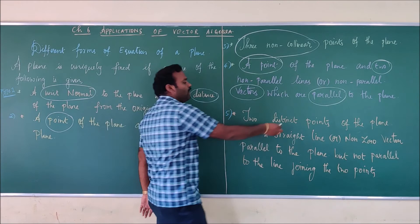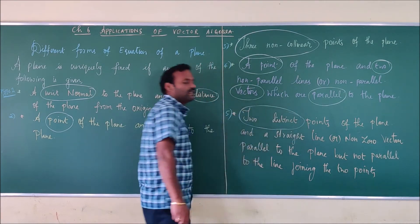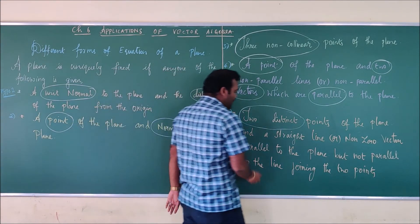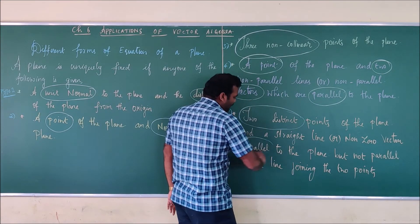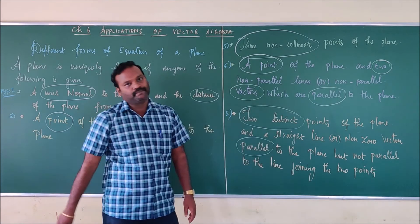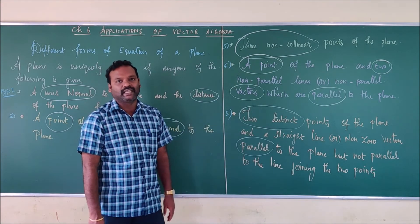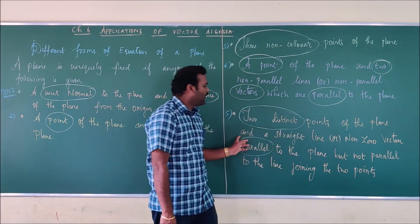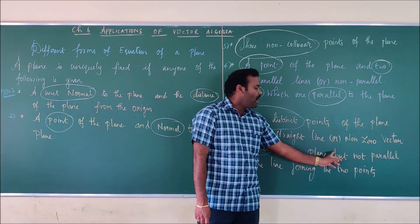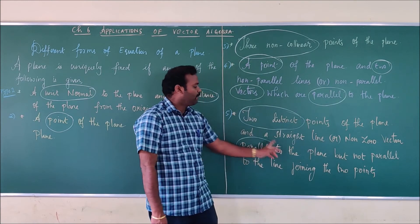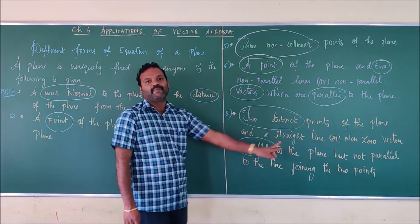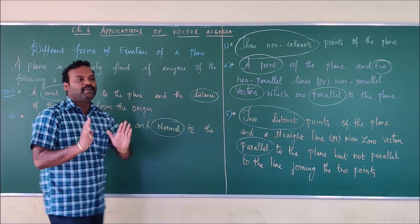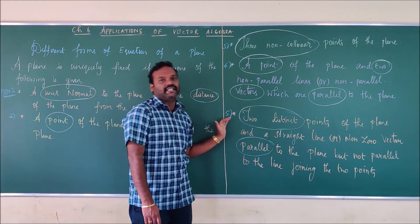Fifth type: you will be given a point and a vector parallel to the plane. That is, two distinct points of the plane and a straight line or non-zero vector parallel to the plane are given — but it should not be parallel to the line joining the two given points.